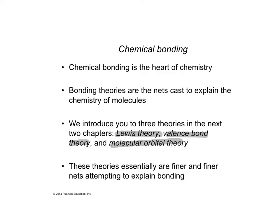Valence bond theory is the next step up — less accessible but explains bonding a little better. Then comes the granddaddy of all bonding theories: molecular orbital theory. This is the hardest to understand, the most complex, and also the most important for organic chemistry. It applies quantum mechanics to bonding, and explains bonding in terms of quantum mechanics, which is really what's actually happening in the real world.